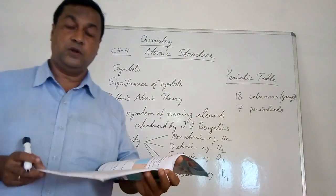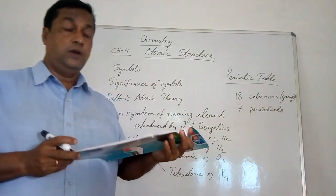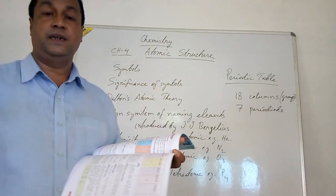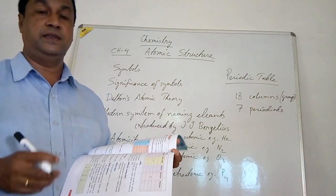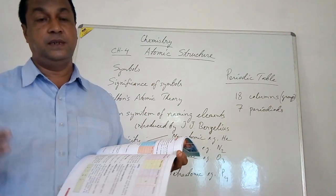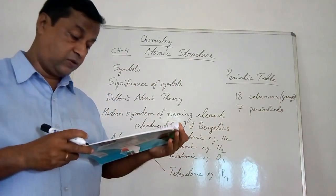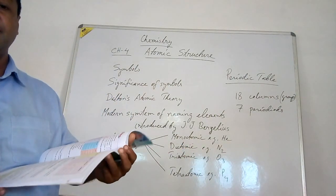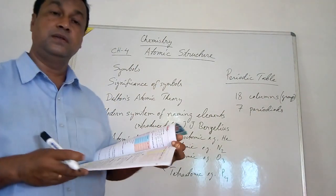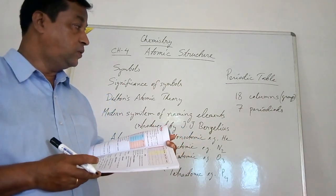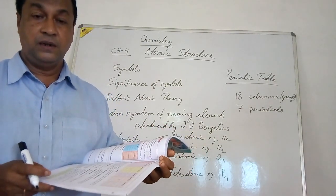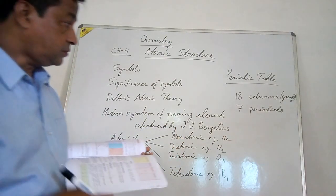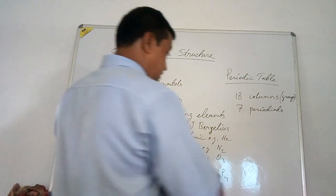Information about orbits is given on page 65 of your textbook. An orbit is an imaginary path or shell in which electrons revolve around the nucleus. When electrons are arranged in different shells around the nucleus, this is called the electronic configuration.